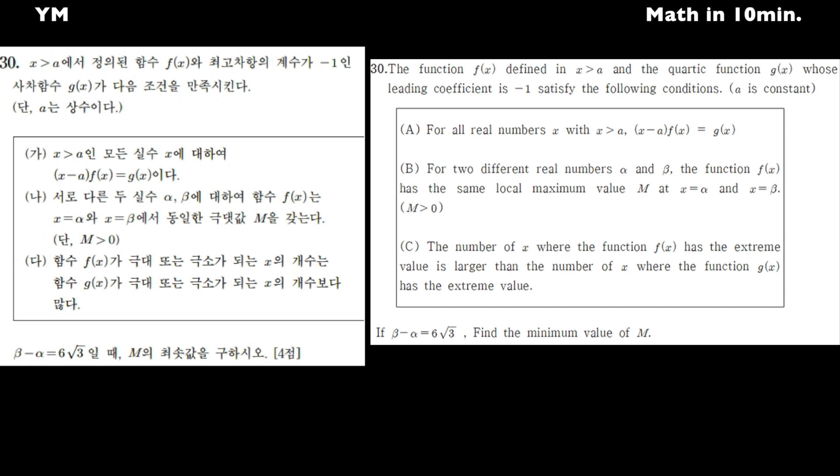For all real numbers x greater than a, (x - a)f(x) is equal to g(x). For two distinct real numbers α and β, f(x) has the same local maximum value M at x equals α and x equals β.